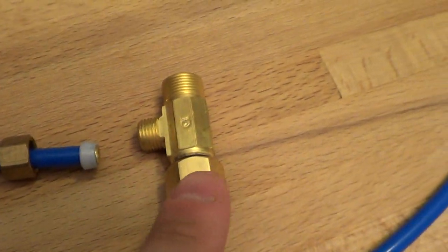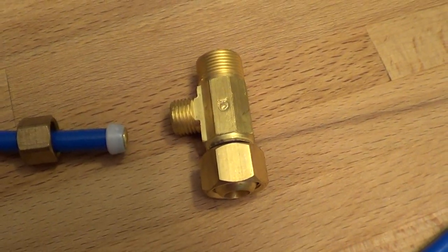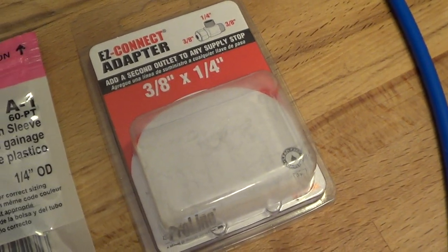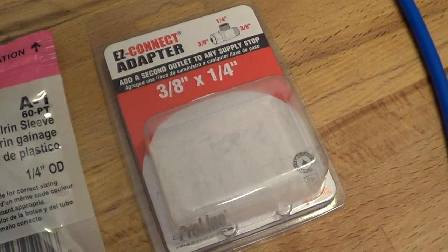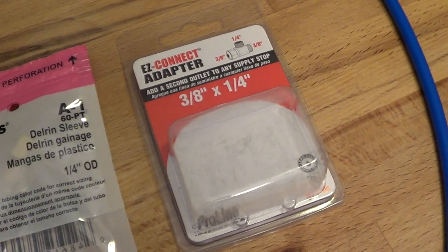This is the fitting that you're going to need. It's a three-eighths inch by one-quarter inch adapter, and it comes in a box like this. You can get it at any hardware store, and it's typically used to connect an ice maker in your refrigerator.